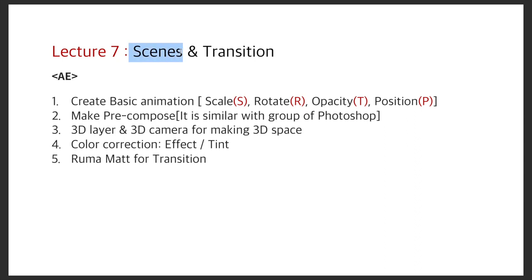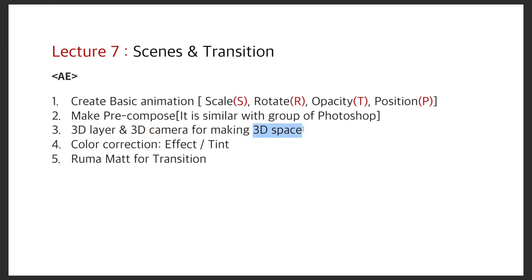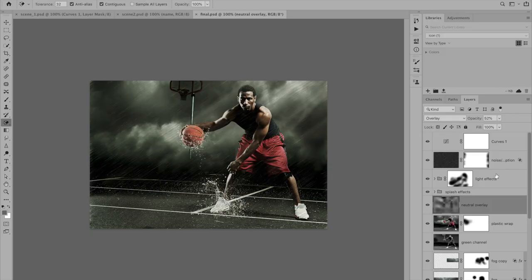We are going to study how to create a scene and transition in this lecture. We will check 3D layer and 3D camera for 3D space, vintage style color correction with the Tint effect, and we are going to make a transition with the luma matte.